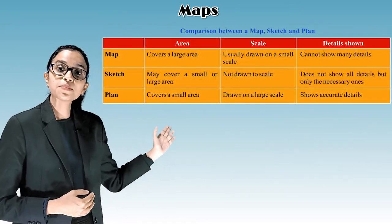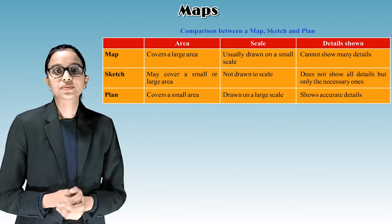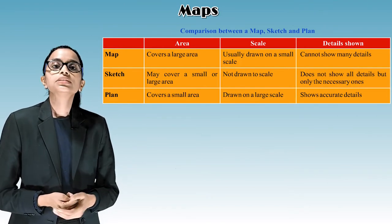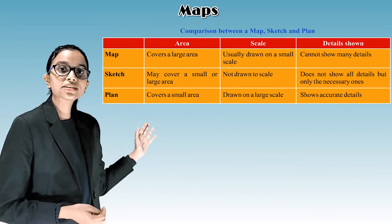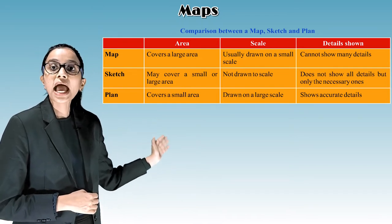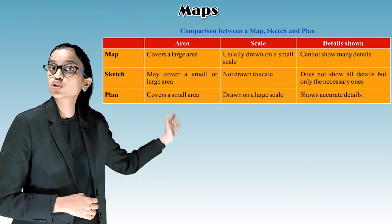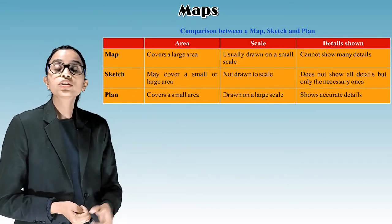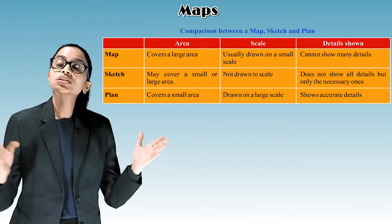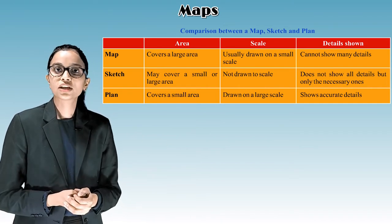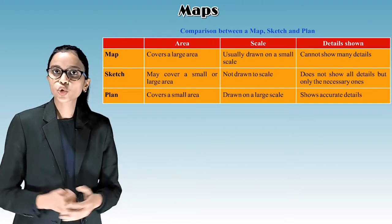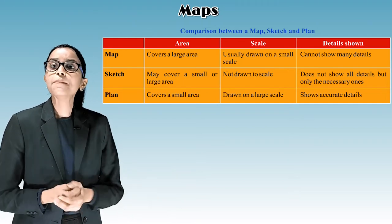Comparison between a map, sketch and plan. So see, this table is categorized into three parts. The first one is area, second one is scale and the third one is details shown. So the first one is map. Area covers a large area. Scale usually drawn on a small scale. Details shown cannot show many details.